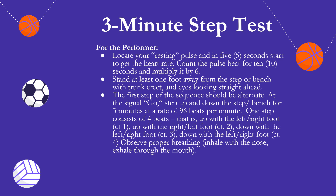Stand at least 1 foot away from the step with trunk erect and eyes looking straight ahead. Alternate which foot steps first. At the signal go, step up and down on the step for 3 minutes at a rate of 96 beats per minute. One step consists of 4 beats: up with the left foot (count 1), up with the right foot (count 2), down with the left foot (count 3), down with the right foot (count 4). Observe proper breathing — inhale through the nose, exhale through the mouth.